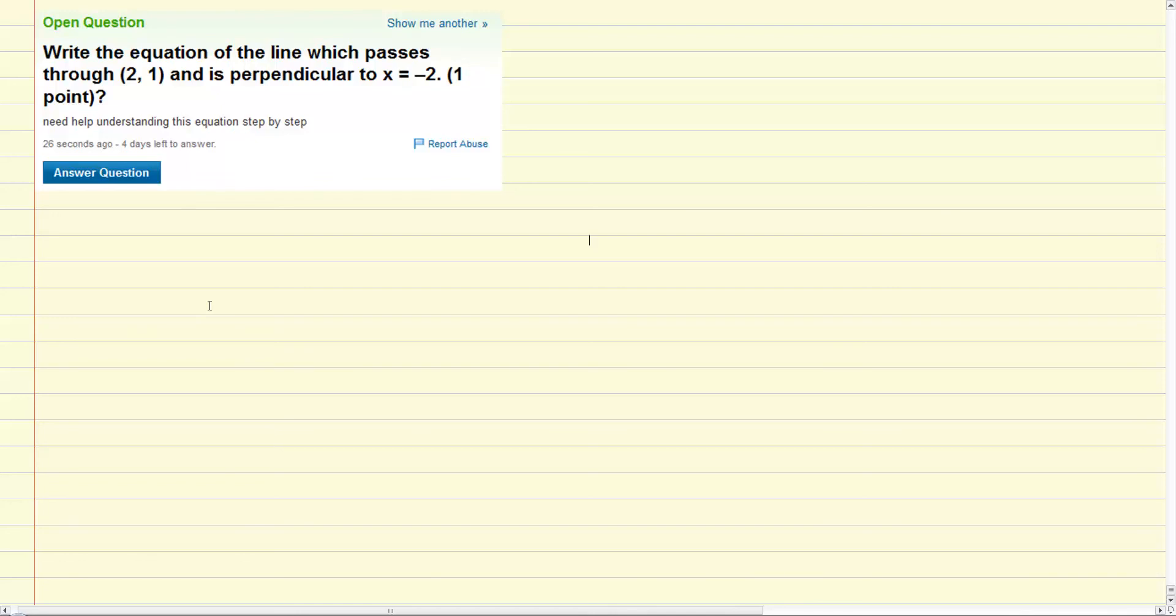Hi, this is Keith from ProTutor and we have an algebra problem here. We have to write the equation of the line which passes through (2, 1) and is perpendicular to x equals negative 2.